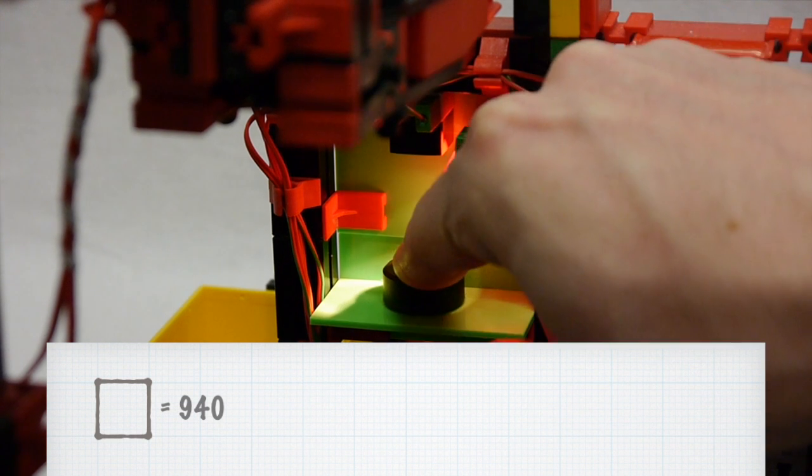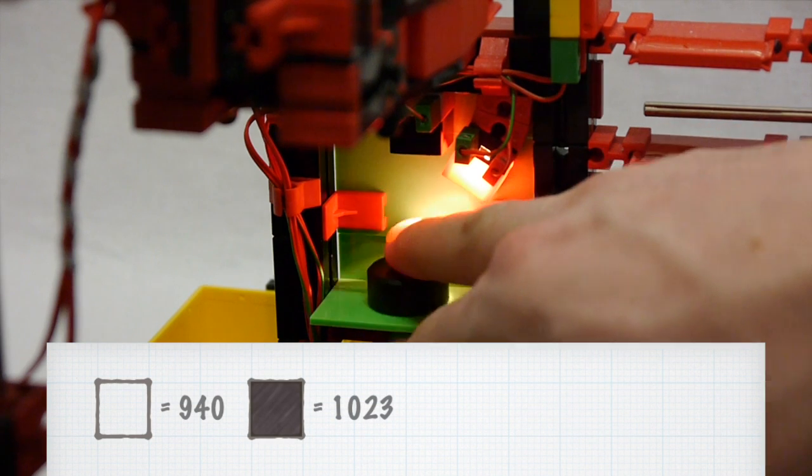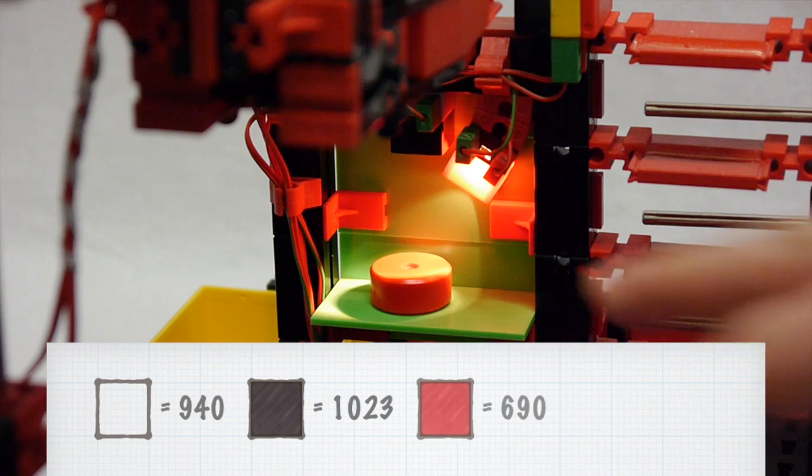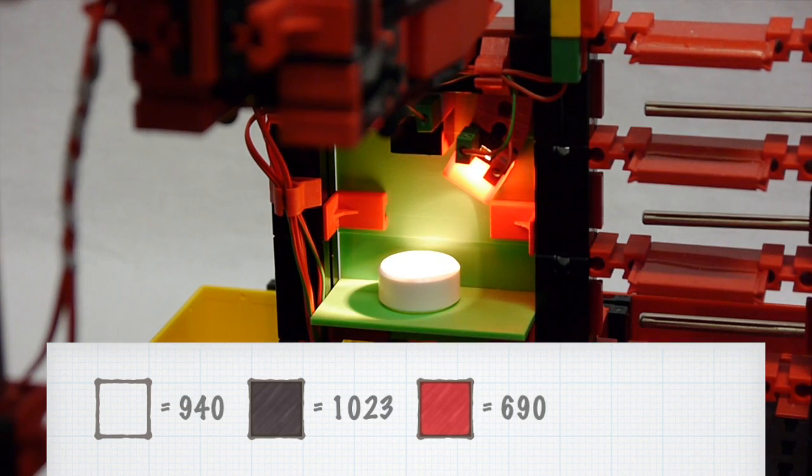Now let's place a black piece in there. Obviously, black surfaces absorb most of the light, so very little gets reflected, making the resistance go up to a value of about 1023. With a red piece, we get a value of about 690, and a white piece reflects most of the light, yielding a value of about 530. As you can see, we can use this as a simple but effective color sensor, so the machine won't need to rely on human operators to tell it the color of the piece it is about to store.